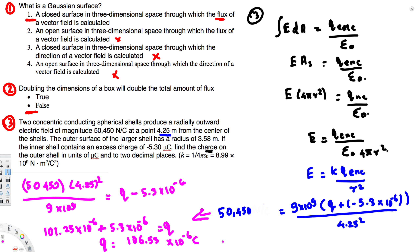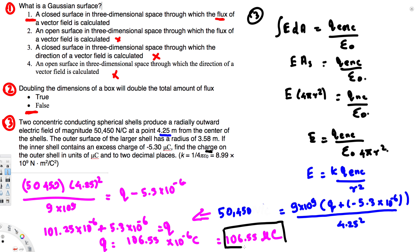So the final answer is Q equals 106.55 microcoulombs. I hope this helps — thanks for watching!